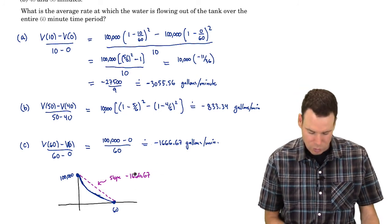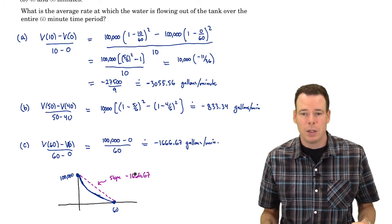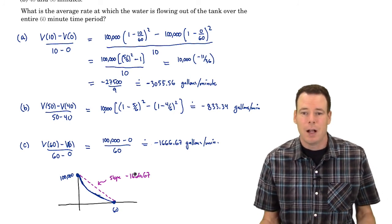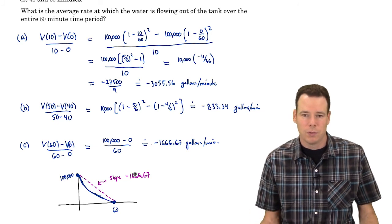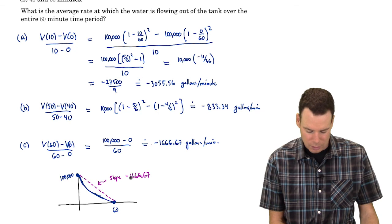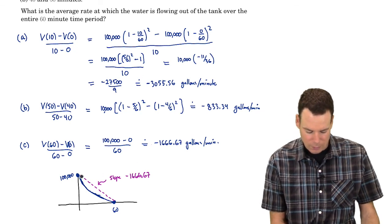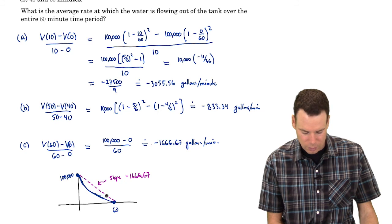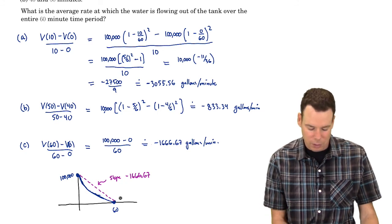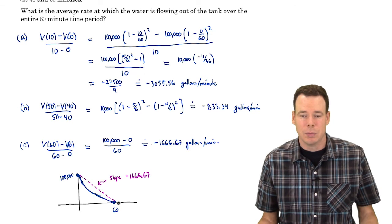A way to interpret this is: imagine we put a valve on the bottom of the tank so that it has to drain at a constant rate. Then the flow rate would have to be negative one thousand six hundred and sixty-six point six seven gallons per minute — that's the constant flow rate required so that one hundred thousand gallons drains over the sixty-minute interval.